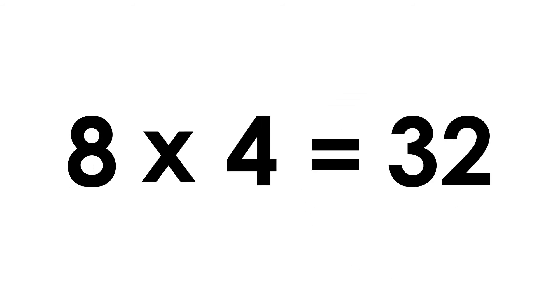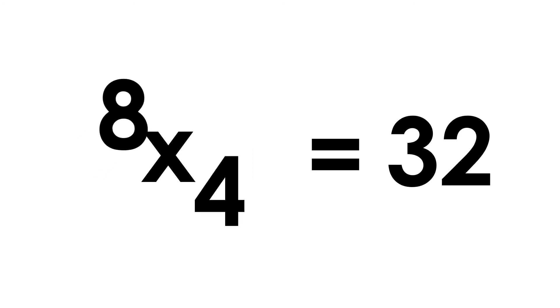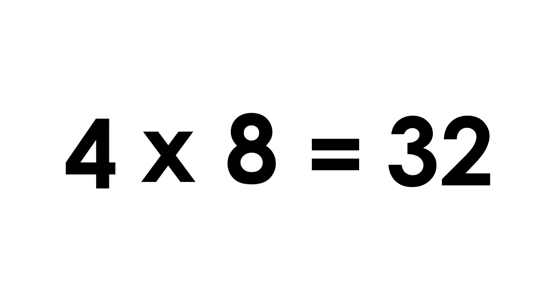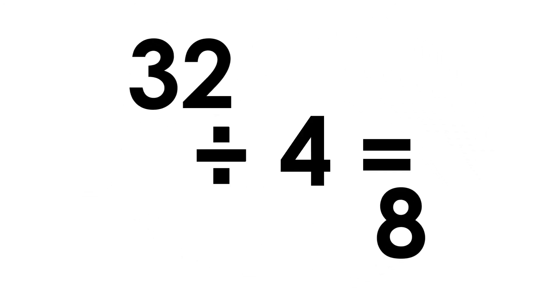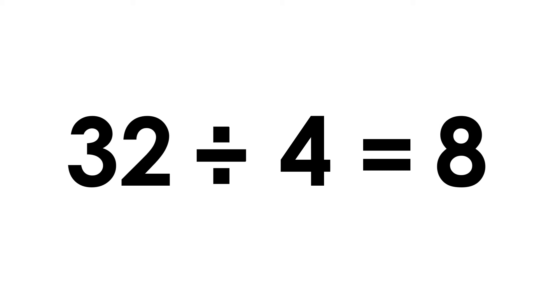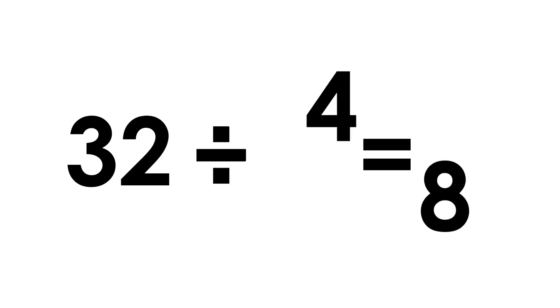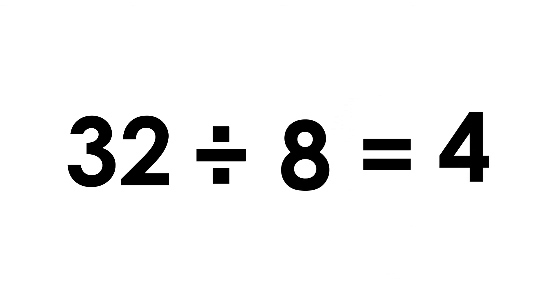Eight fours are thirty two. Four eights are thirty two. Thirty two divided by four is eight. Thirty two divided by eight is four.